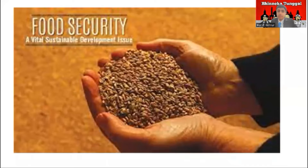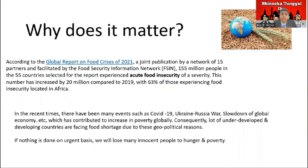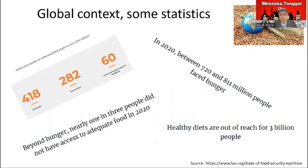I'm going to be talking about food security. Food security exists when all people at all times have physical and economic access to sufficient, safe, and nutritious food. According to a report, 155 million people in 55 countries experienced acute food insecurity, an increase of 20 million compared to 2019, with 63% located in Africa. Events such as COVID-19, the Ukraine-Russia war, and the lockdown of the global economy have contributed to increased poverty globally, causing many underdeveloped and developing countries to face food shortage.